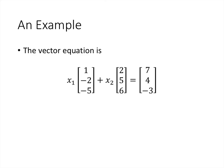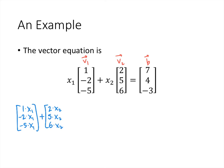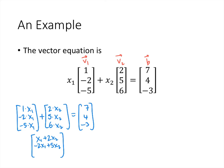Writing out the vector equation and performing scalar multiplication: x1 times [1, -2, -5] gives [x1, -2x1, -5x1], and x2 times [2, 5, 6] gives [2x2, 5x2, 6x2]. Adding those two vectors gives [x1 + 2x2, -2x1 + 5x2, -5x1 + 6x2], and the question is whether this equals [7, 4, -3].